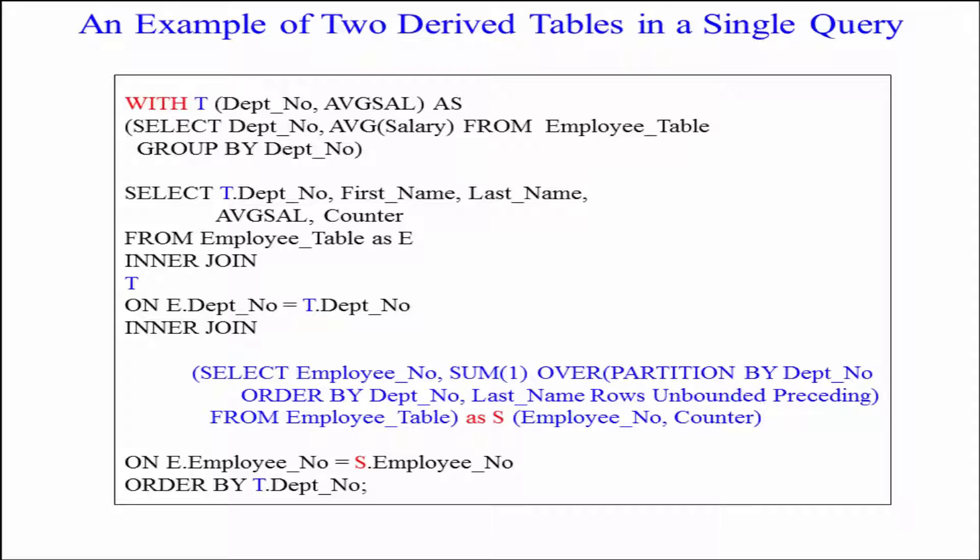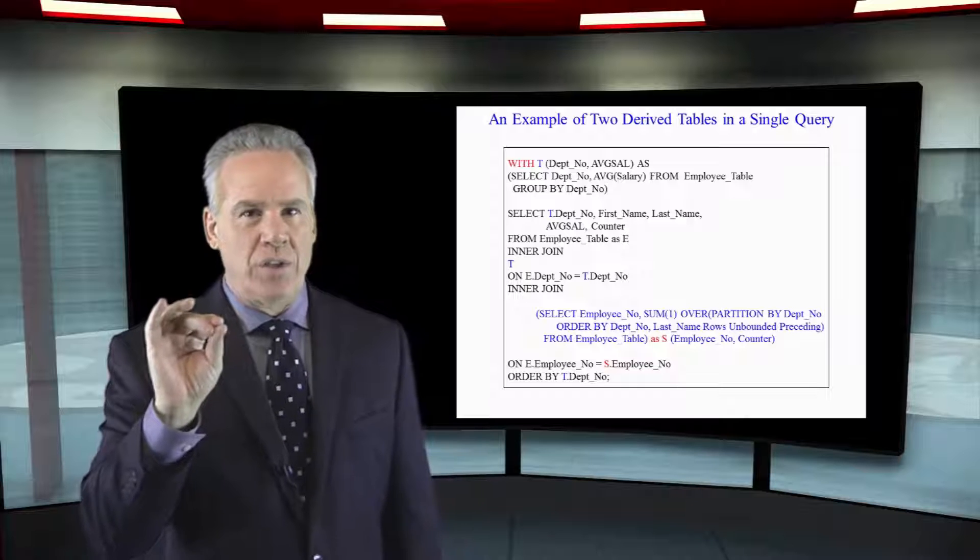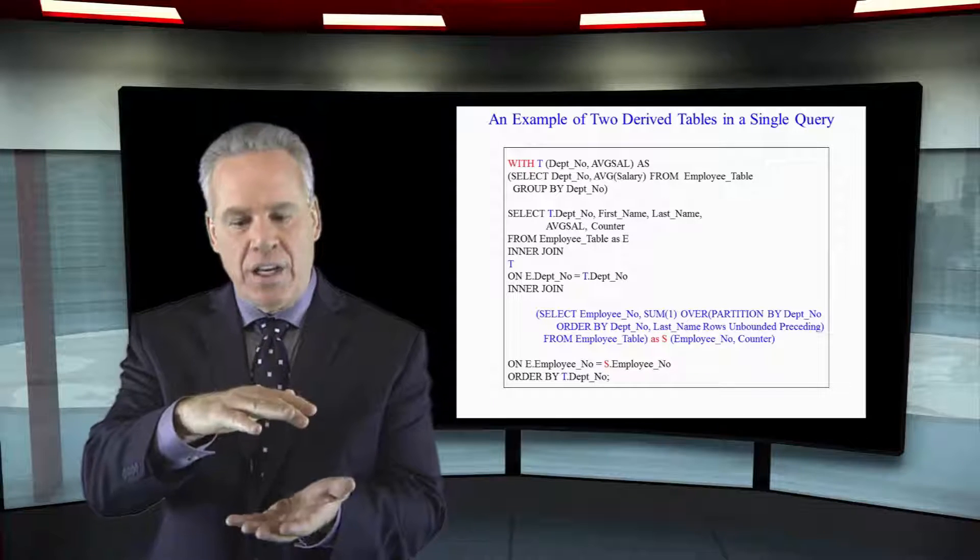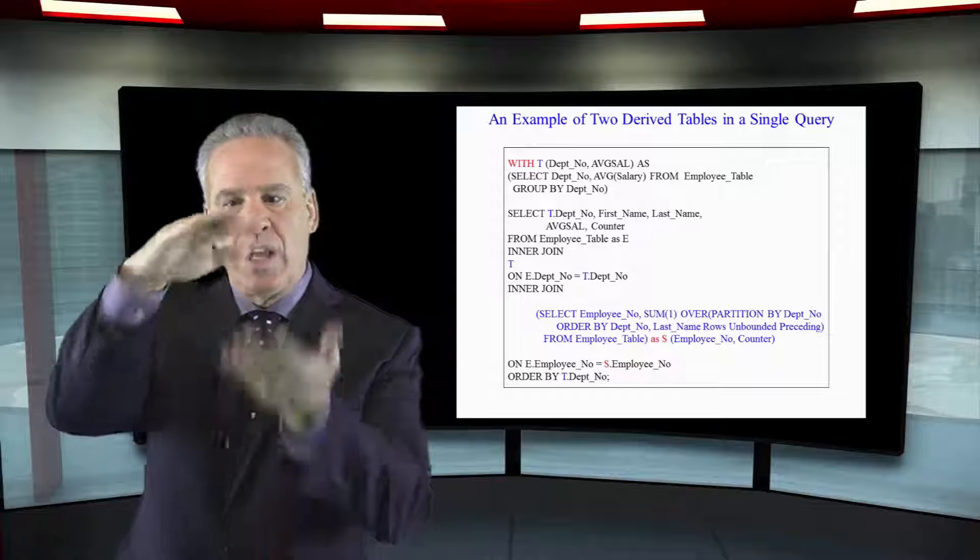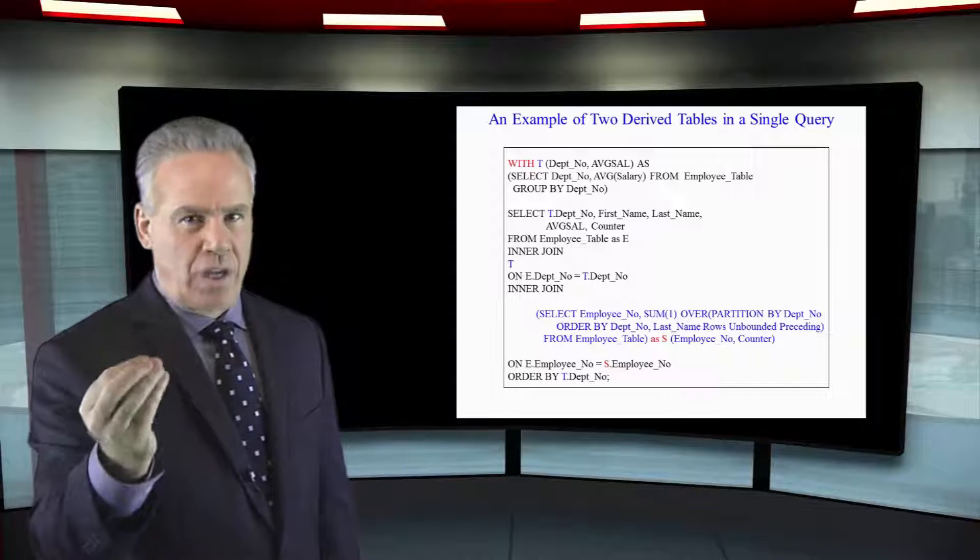Then I start my select and select all the columns from the employee table as E. Inner join T and I define how I'm going to inner join them. Then I have another inner join and I run my select query where I build another derived table called S. You're gonna have in many cases a lot of derived tables and they're their own separate entity, and you just merely join those like you would permanent tables. That's what I want you to understand.